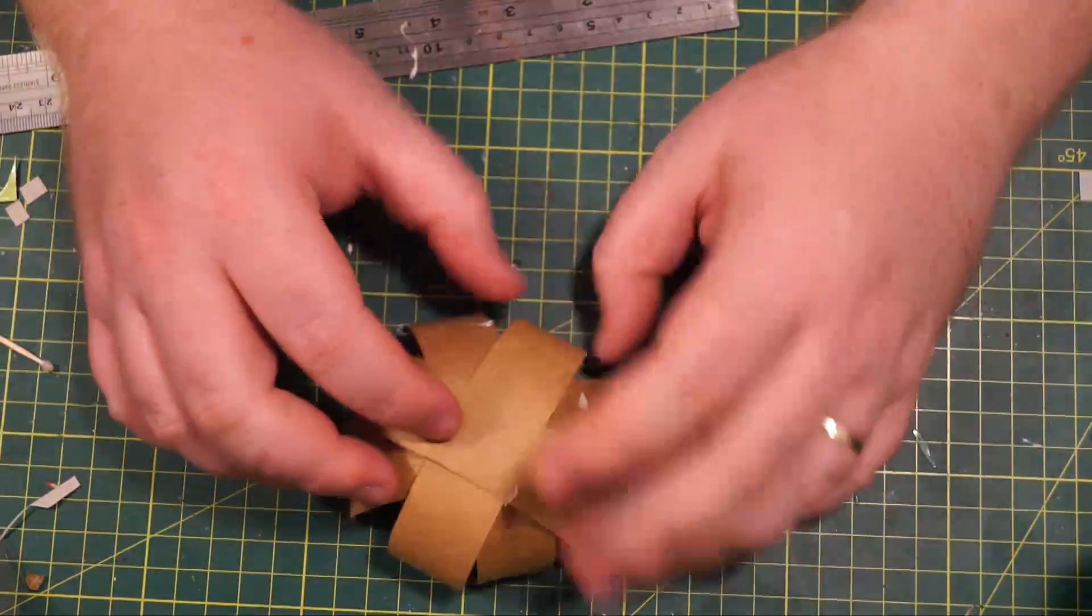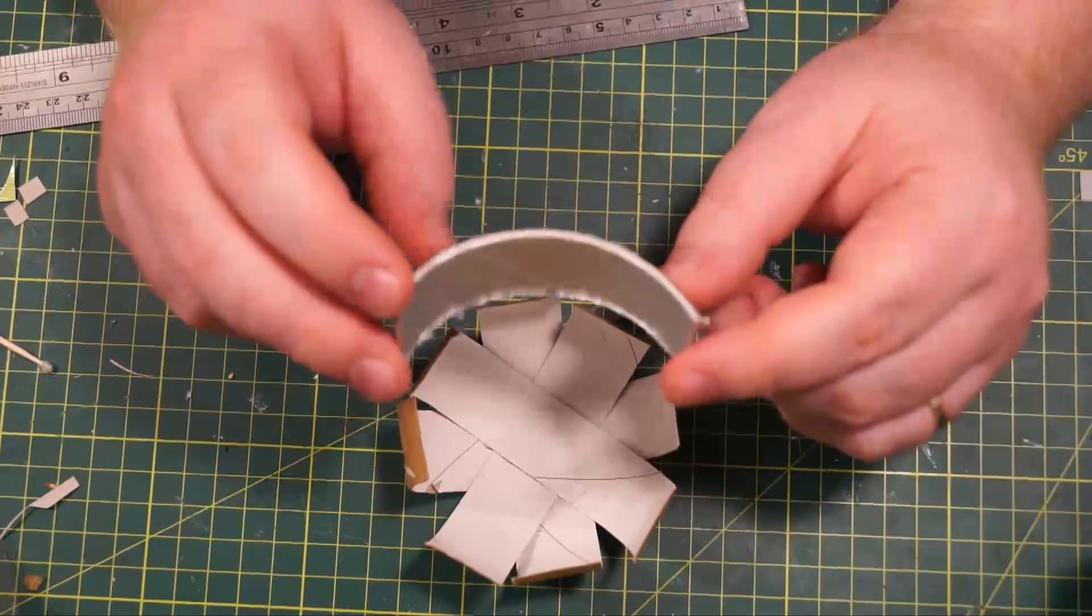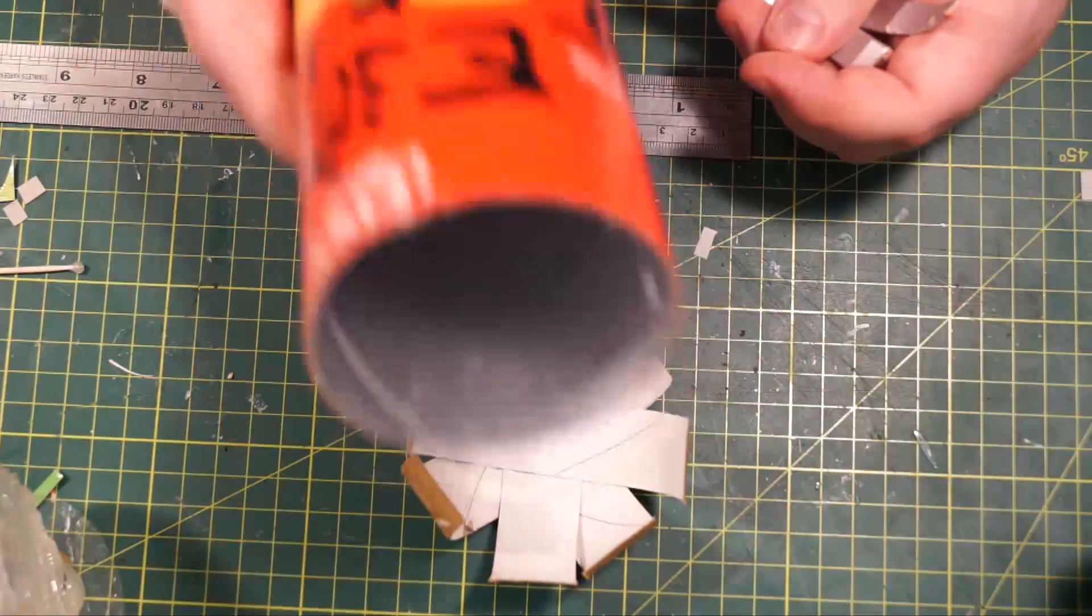So now you have this DMG flower cup thing, which is essentially the arch vault thing that you would normally find in the ceiling of some kind of dungeon.